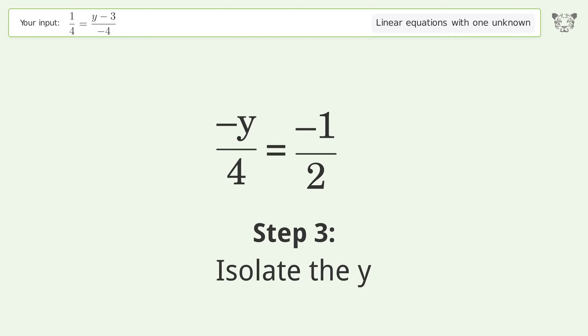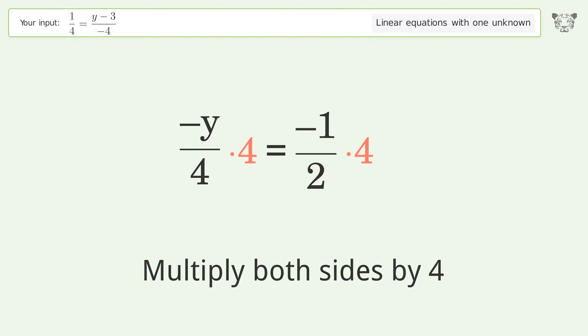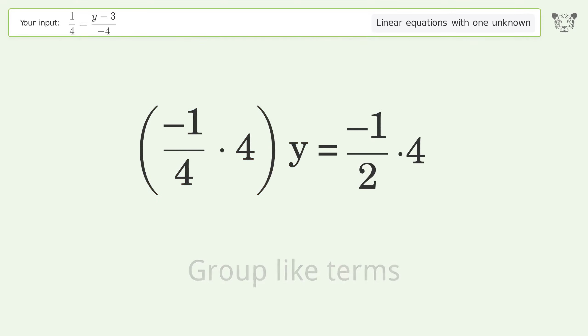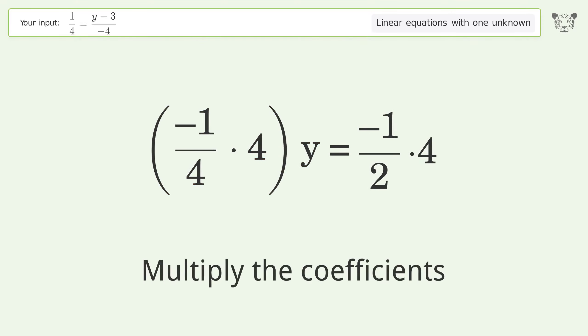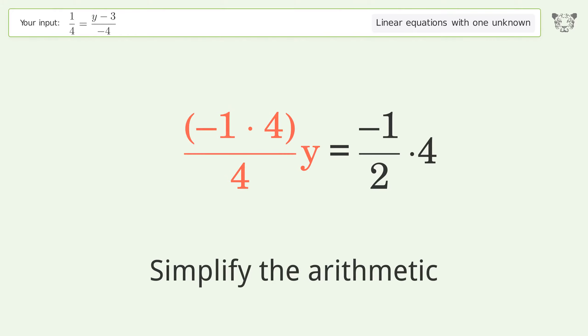Isolate the y. Multiply both sides by 4. Group like terms. Multiply the coefficients. Simplify the arithmetic.